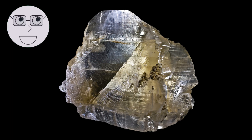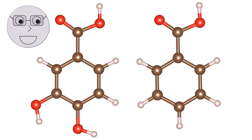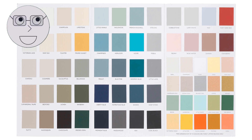As we mentioned earlier, minerals have unique properties that are determined by their chemical composition and atomic structure. Let's take a closer look at some of these properties. The color of a mineral is determined by the way it absorbs and reflects light. Some minerals, such as quartz, have a single color.